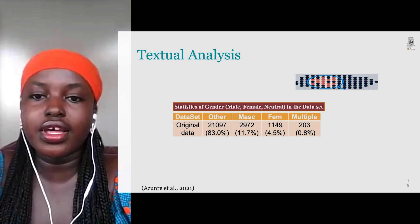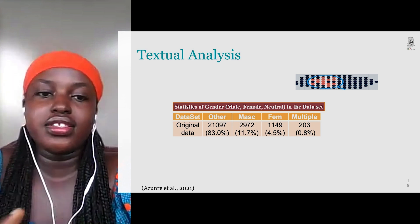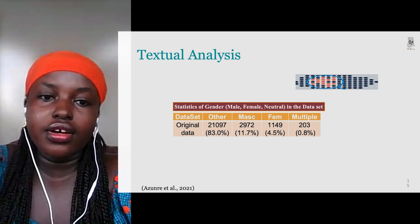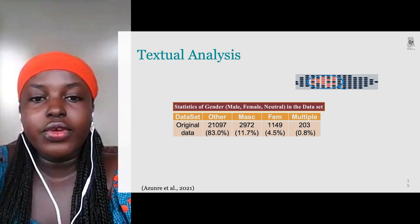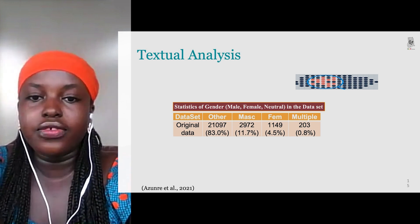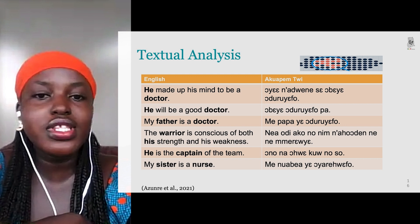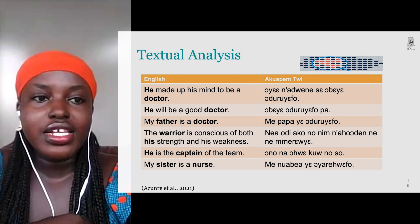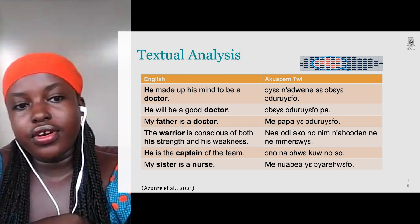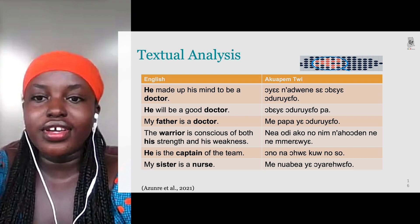First, I examined the percentage of masculine sentences in the corpus used to build the system, as well as sentences with multiple or ambiguous gendered characters, and sentences with no male or female characters. I found 11.77% masculine sentences and 4.5% feminine sentences. Going deeper, I found 'he' associated with 'doctor,' 'father' associated with 'doctor,' and 'warrior' associated with masculine pronouns — reflecting how society typically presents these roles.